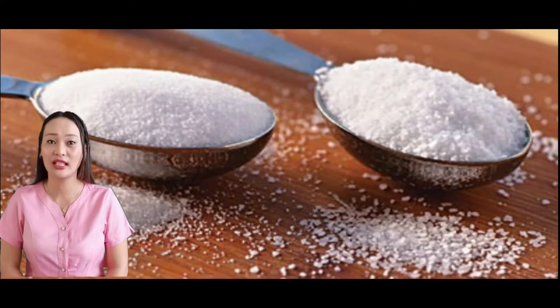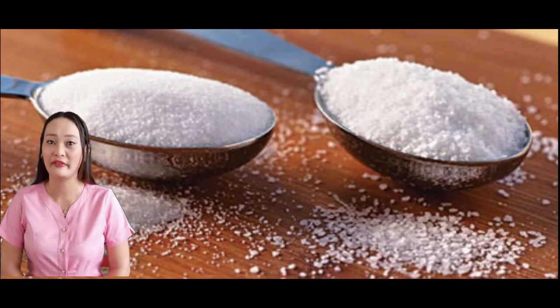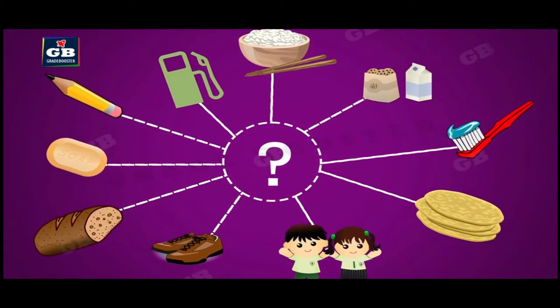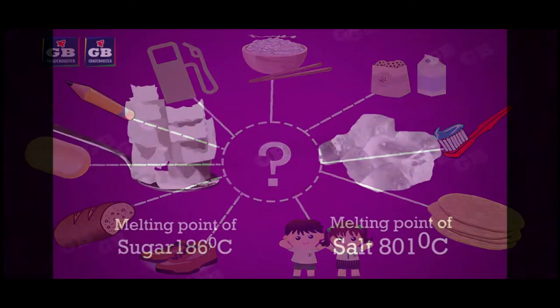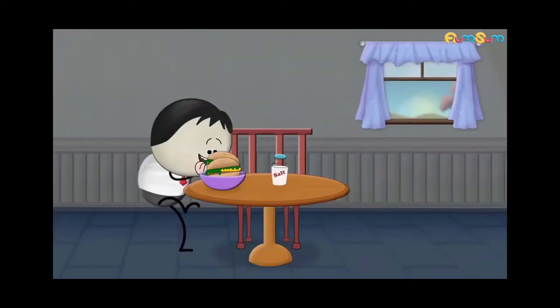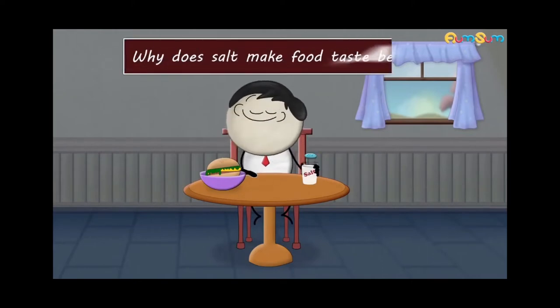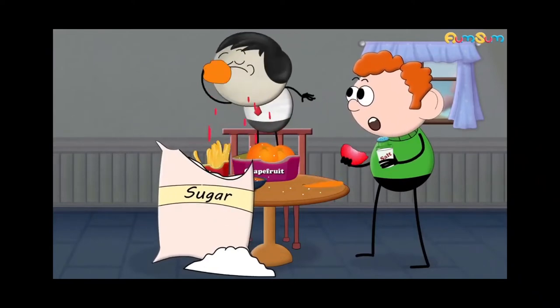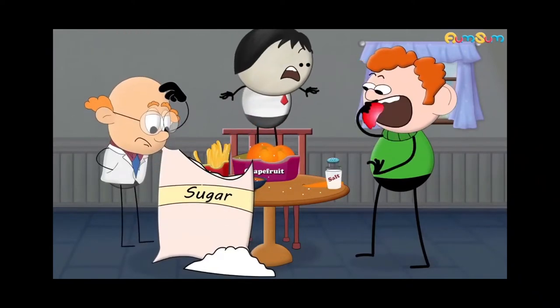Have you ever seen salt and white sugar side by side without any labels? How do you differentiate one from the other? There is a wide variety of compounds and most of them look physically the same, like table salt and white sugar. It would be easier to determine these substances by tasting them. However, this method of identifying substances does not apply to other compounds since some of them can be toxic. Let us now refer to the PowerPoint presentation that will help you understand the activity.